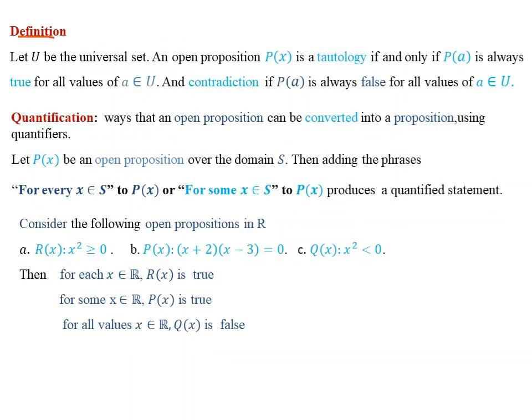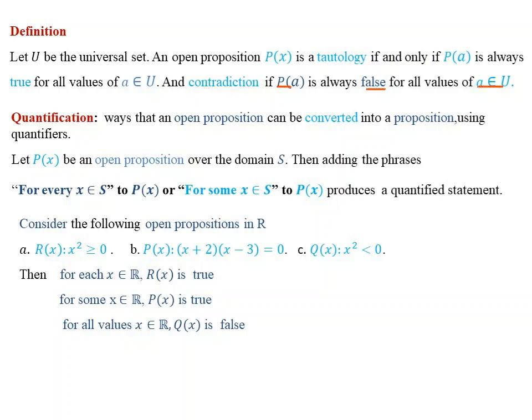Definitions: let U be the universal set and P of x an open proposition. P of x is a tautology if and only if P of a is always true for all values of a, an element of U. And P of x is a contradiction if P of a is always false for all values of a, an element of U.